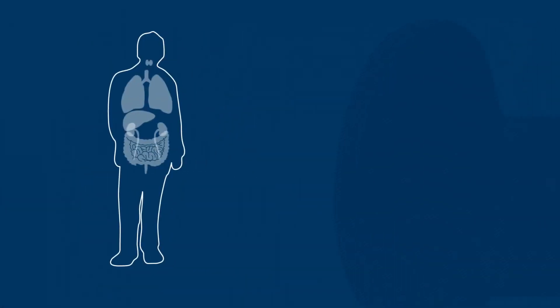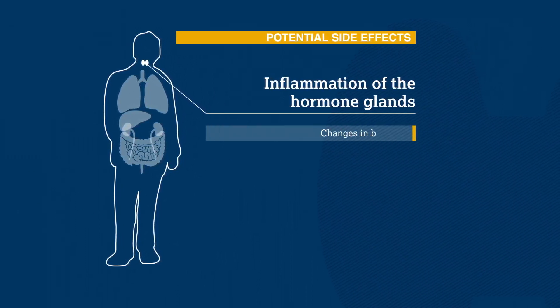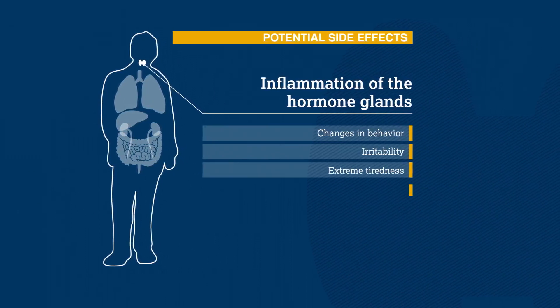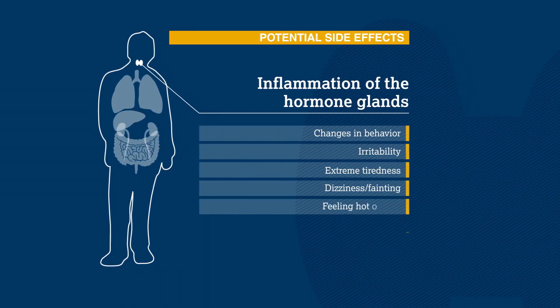Immunotherapy may also have an effect on a patient's hormones, which can cause unexpected changes in behavior, being really irritable or tired all the time, dizziness or fainting, feeling hot or cold,